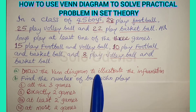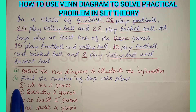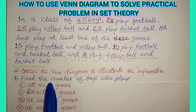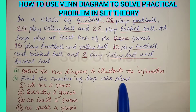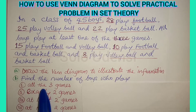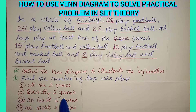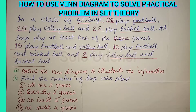Draw the Venn diagram to illustrate the information. Part B: find the number of boys who play all three games, exactly two games, at least two games, and at most two games.